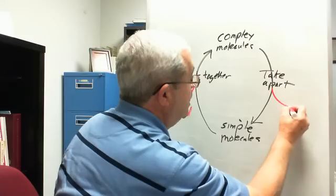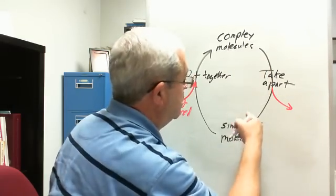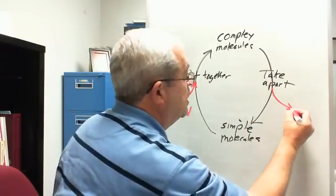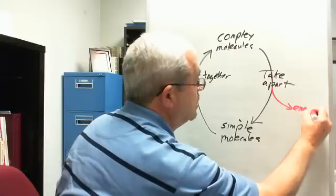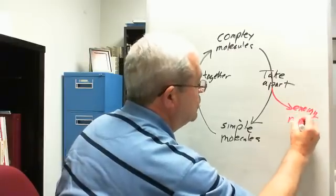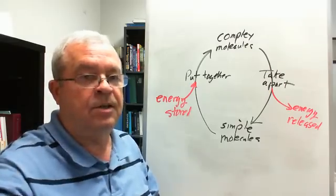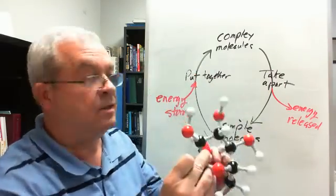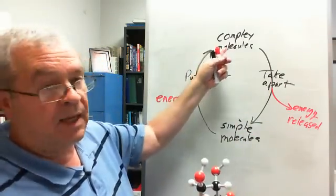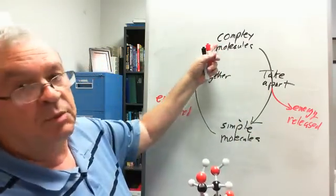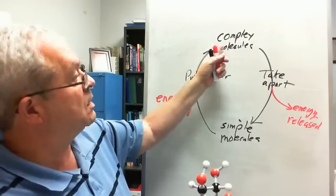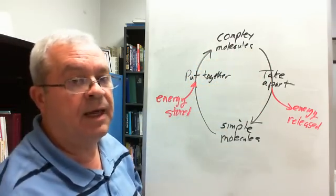And when complex molecules are taken apart to form simple molecules, energy is what? We can say that energy is released. Now, again, all this has to do with what? Chemical bonds. This involves forming chemical bonds, putting simple molecules together to form complex. This involves breaking chemical bonds.